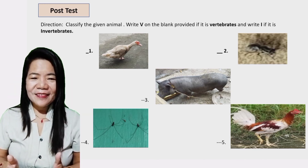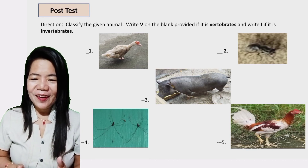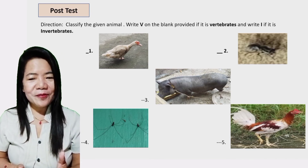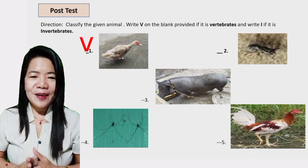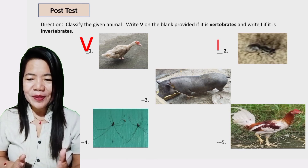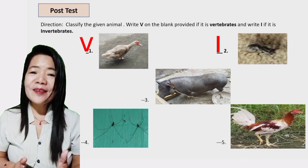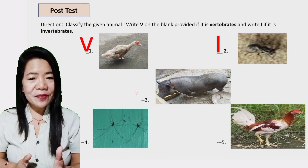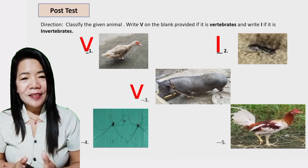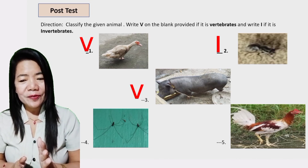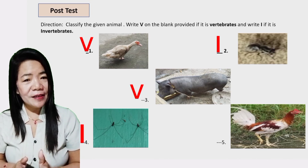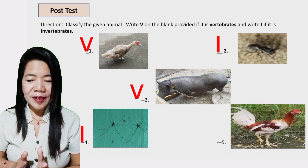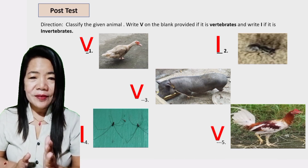Okay, let's check your answer. Answer number 1: V — vertebrate. Number 2: I — invertebrate. Number 3: V — vertebrate. Number 4: I — invertebrate. Number 5: V — vertebrate.